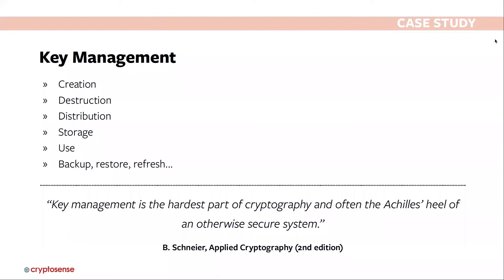Let's start with key management. At CryptoSense we have a SaaS tool — the CryptoSense Analyzer platform — where people upload cryptographic traces and our tooling finds errors and weaknesses. The data shows that key management is the category of vulnerability we see most often. That's because key management is a difficult problem involving the creation of keys, their destruction when no longer needed, distributing them to the right people, storing them securely, ensuring they're used according to the right policy, keeping backups, restoring backups, and rolling over keys. As Bruce Schneier — who wrote seminal books on applied cryptography — said: 'Key management is the hardest part of cryptography and often the Achilles heel of an otherwise secure system.'